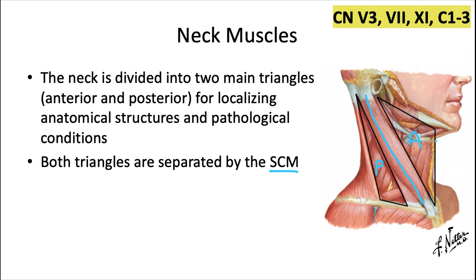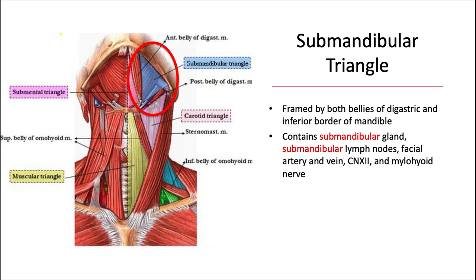The reason for these triangular divisions is for localizing anatomical structures within each and localizing pathological conditions. We're going to start by unpacking the anterior triangle, which is itself subdivided into four smaller triangles.